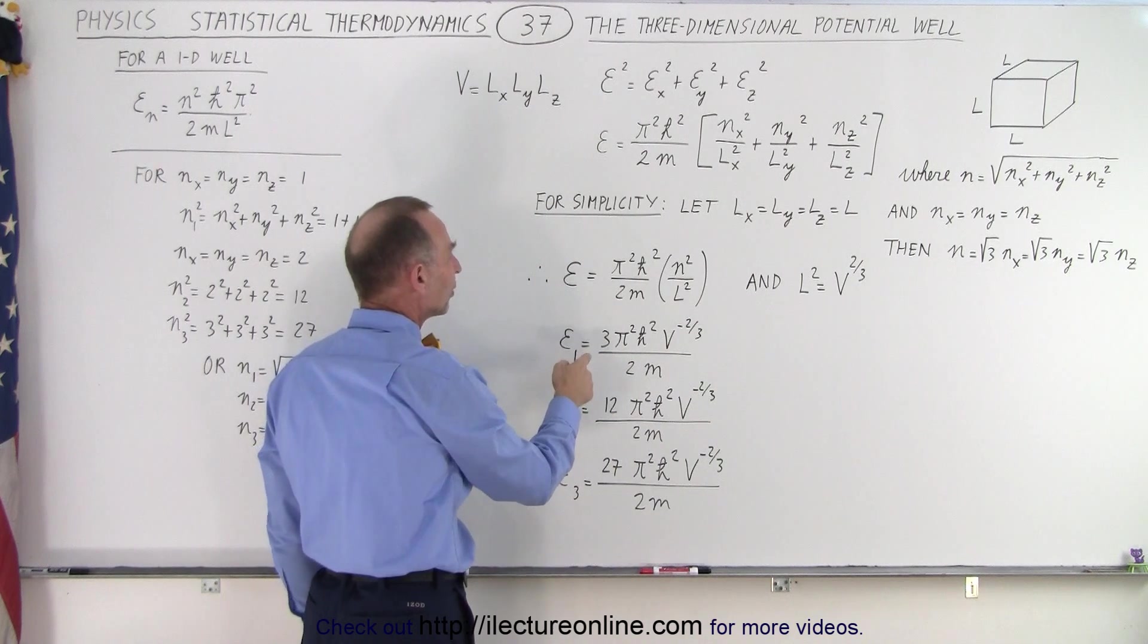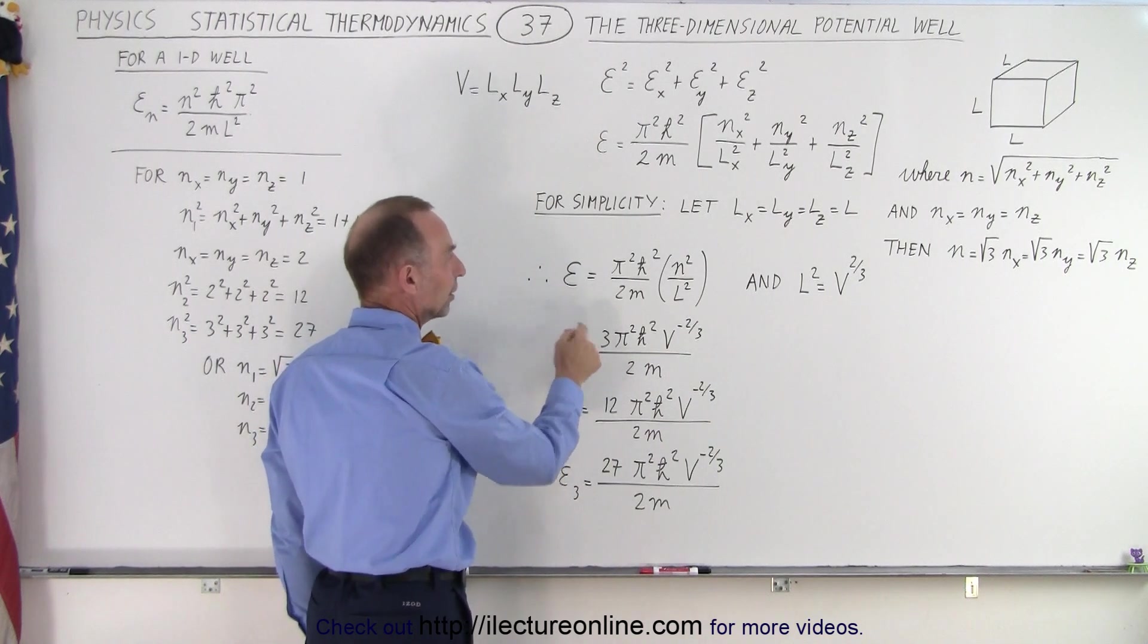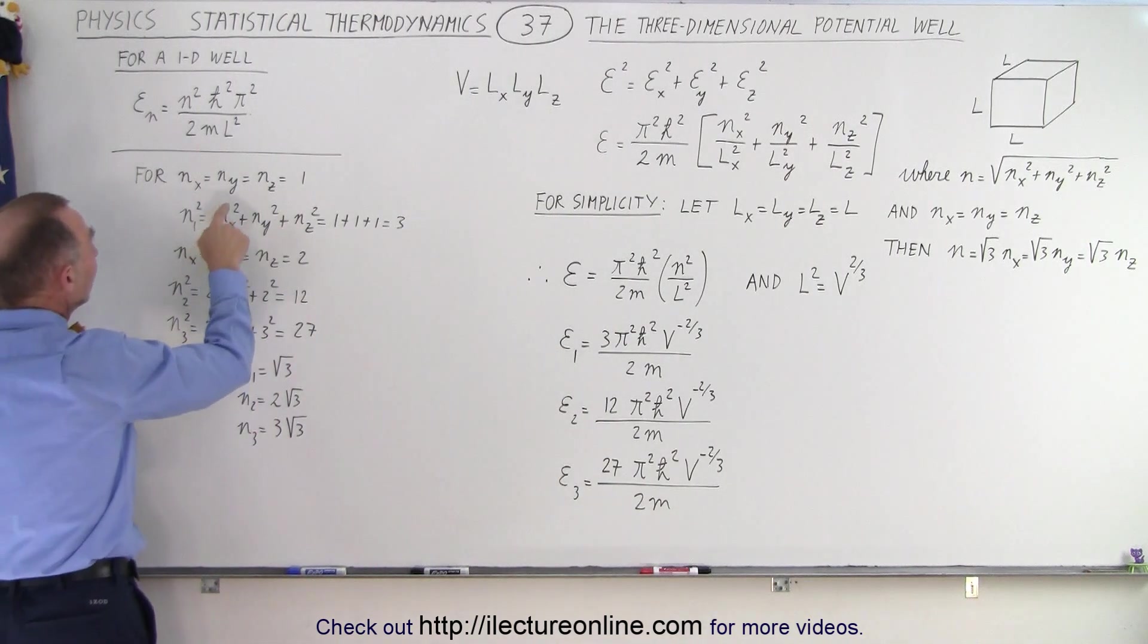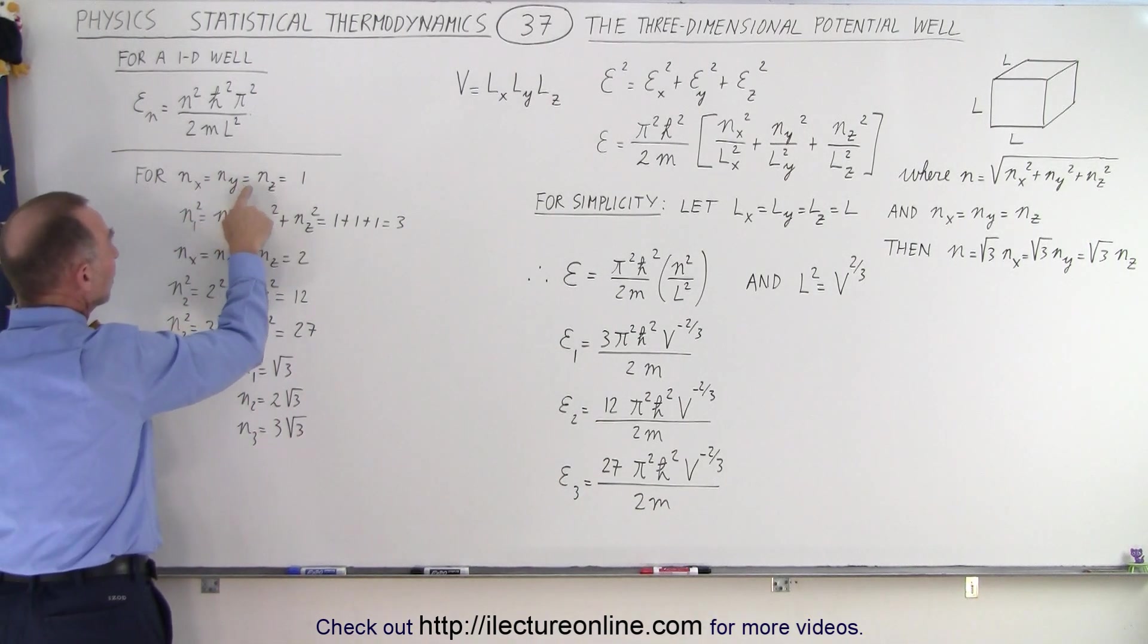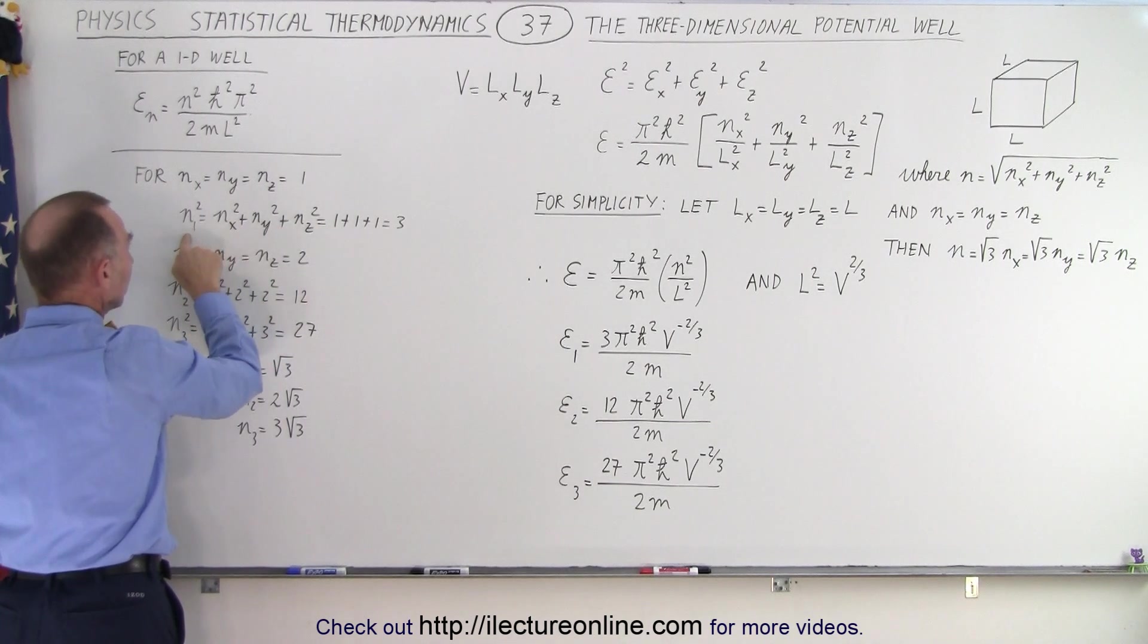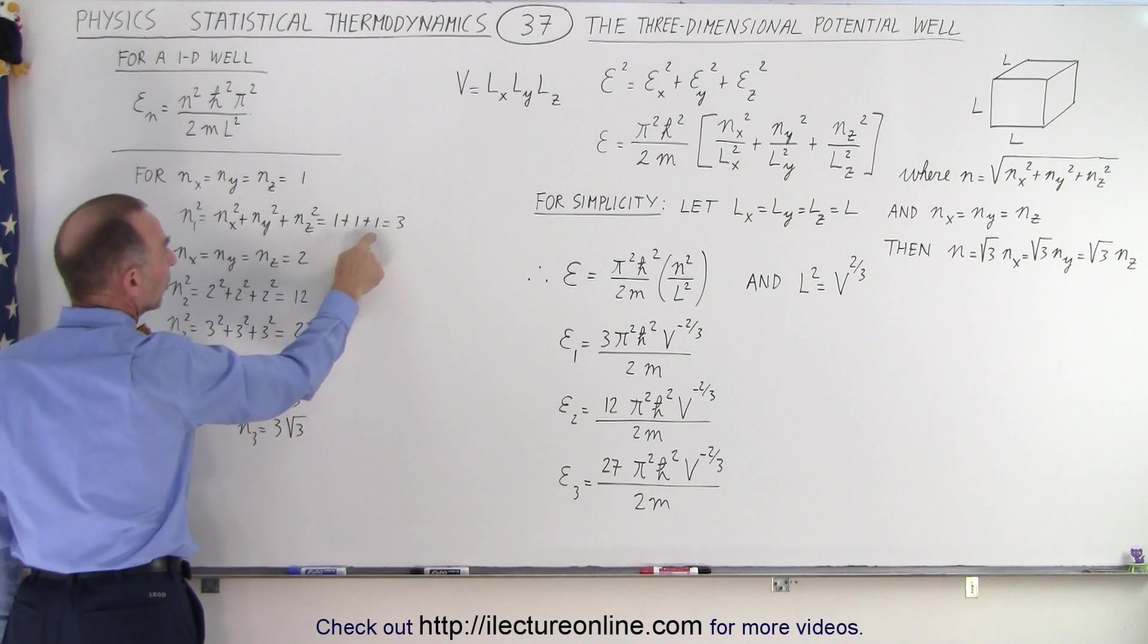Now, notice when we come back over here, if n sub x equal to n sub y equals n sub z equals to one, then n one squared is simply going to be the sum of the squares, or one plus one plus one, or three.